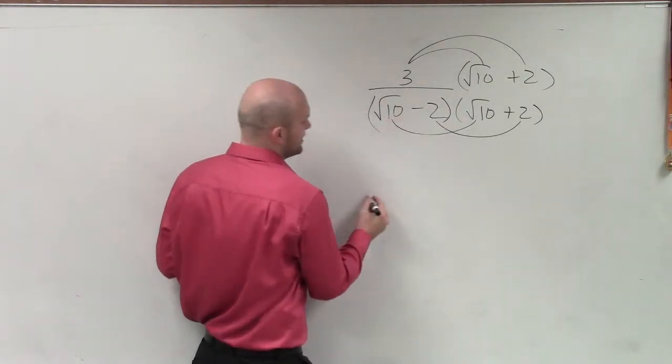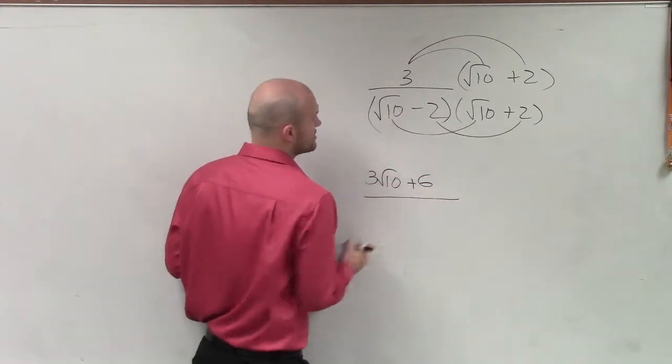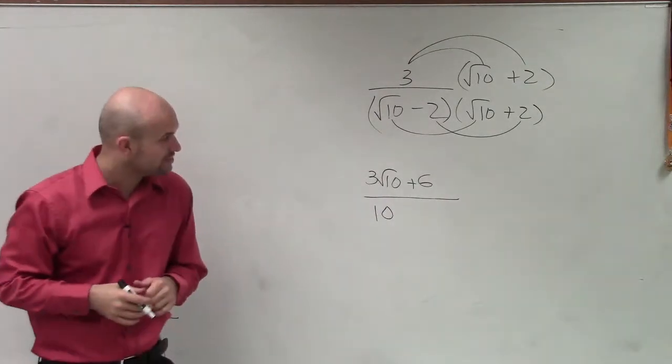So let's do the top again. So 3 times square root of 10 is 3 square root of 10. 3 times 2 is 6. Square root of 10 times square root of 10 is just going to be square root of 10 squared, which is just 10.